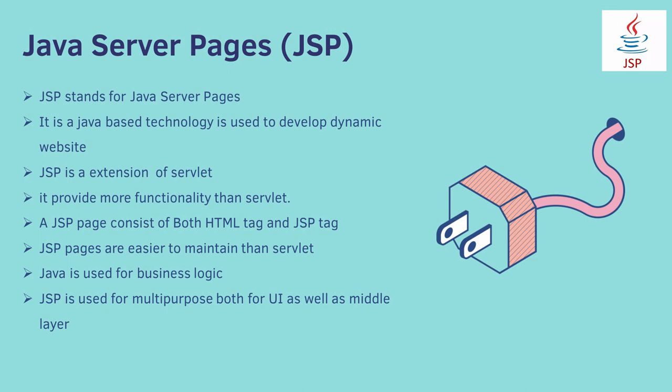GSP is a Java based technology that is used to develop dynamic websites. This is the main use of GSP. If you want to create a dynamic website, it is better to use GSP, or you can use servlet pages also. Both are Java based technologies. GSP is an extension of servlet because it provides more functionality than servlet. A GSP page consists of both HTML tags and GSP tags.